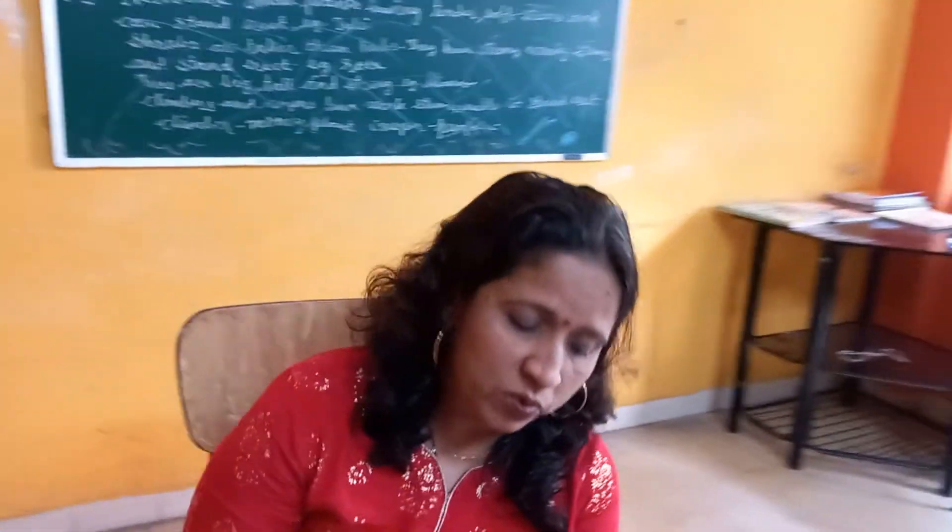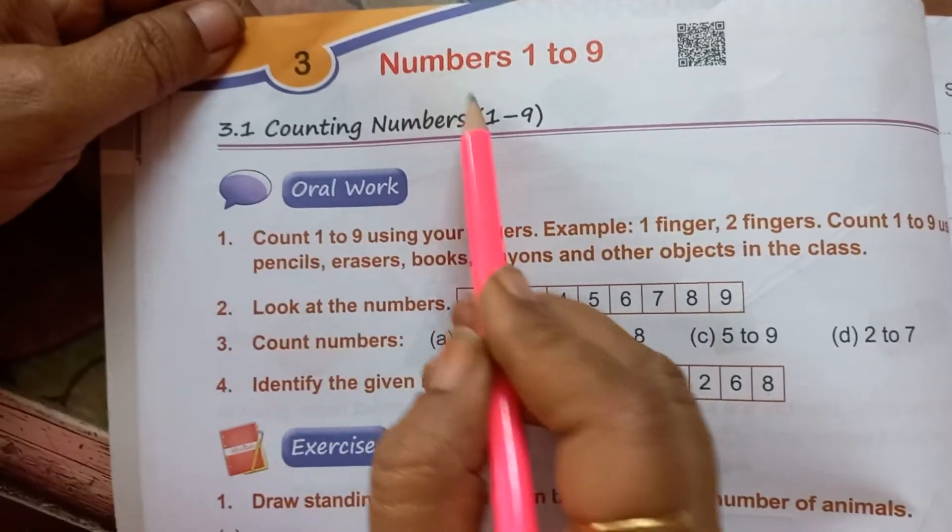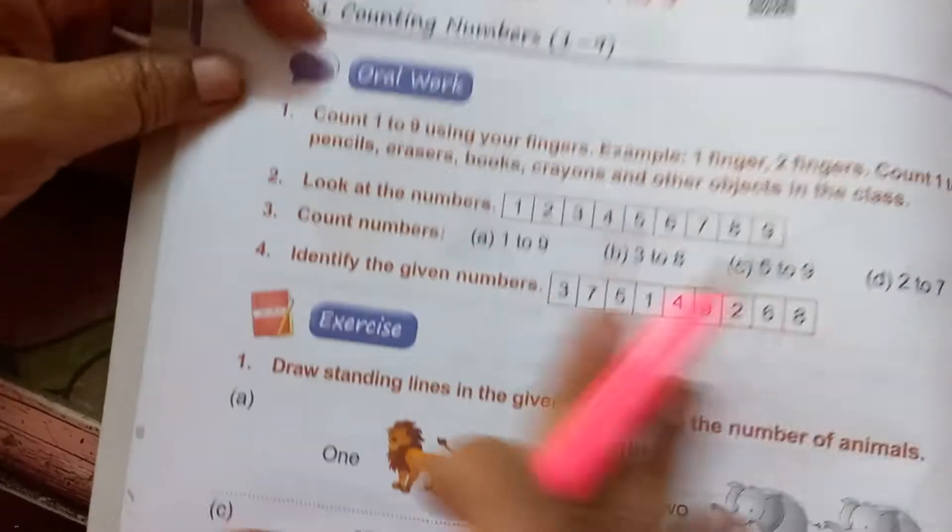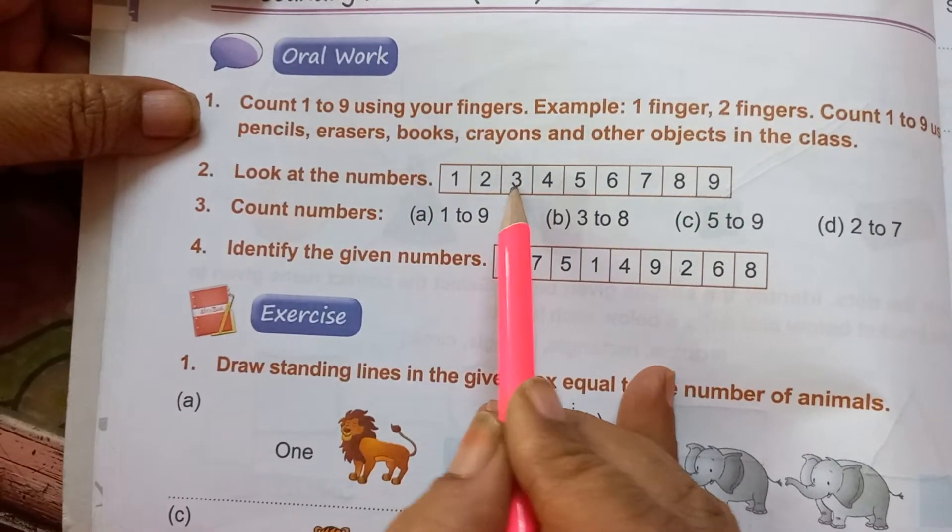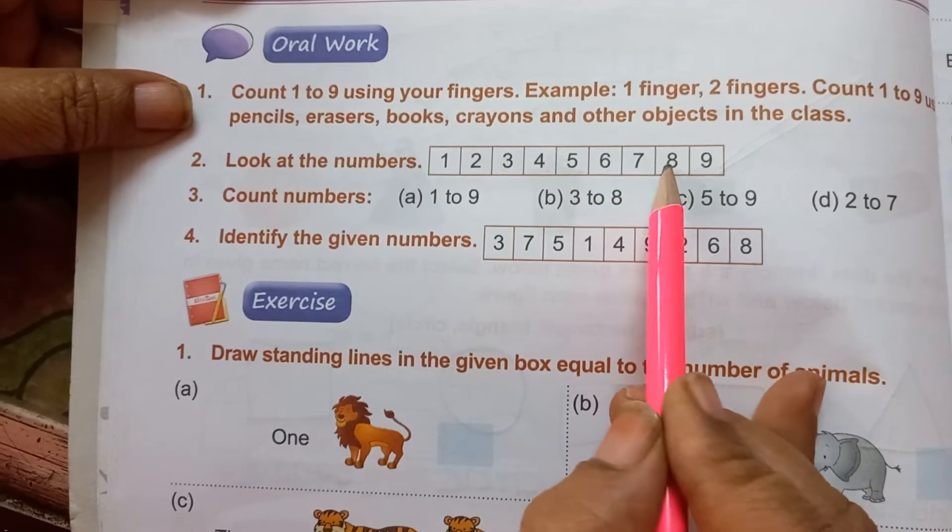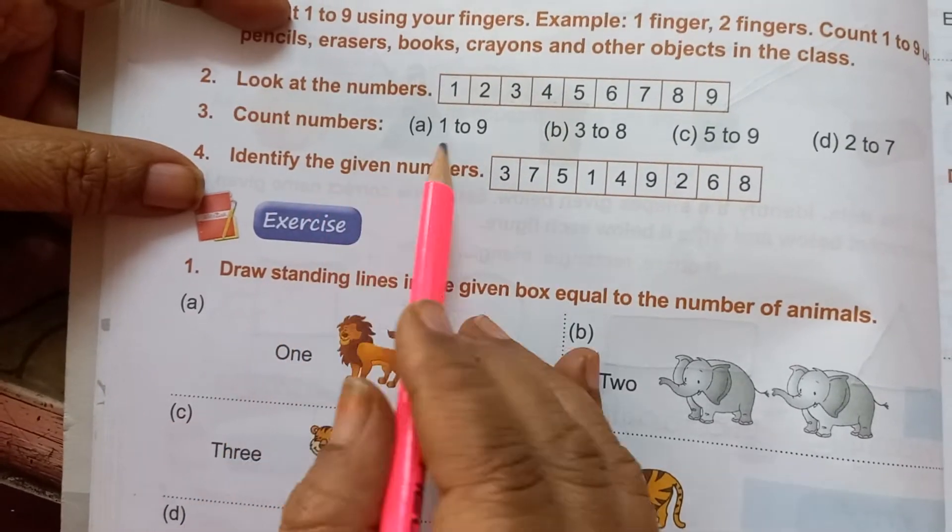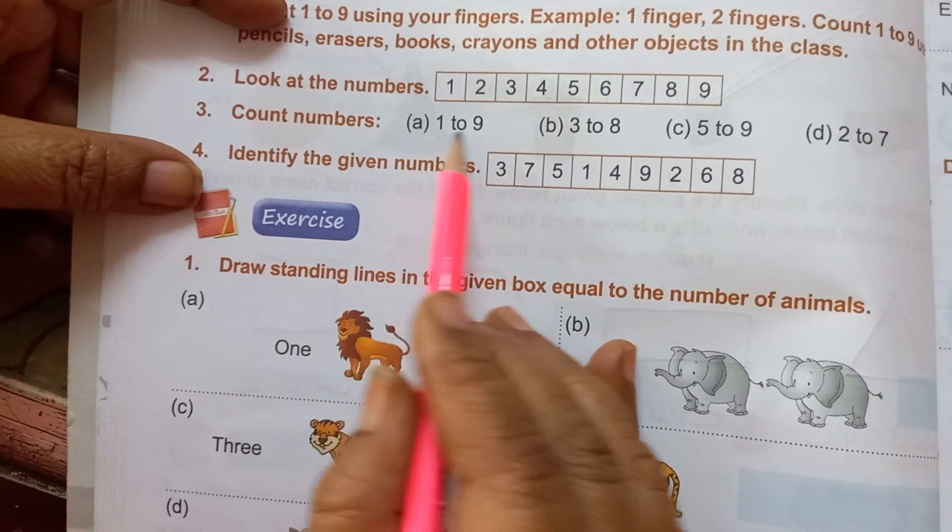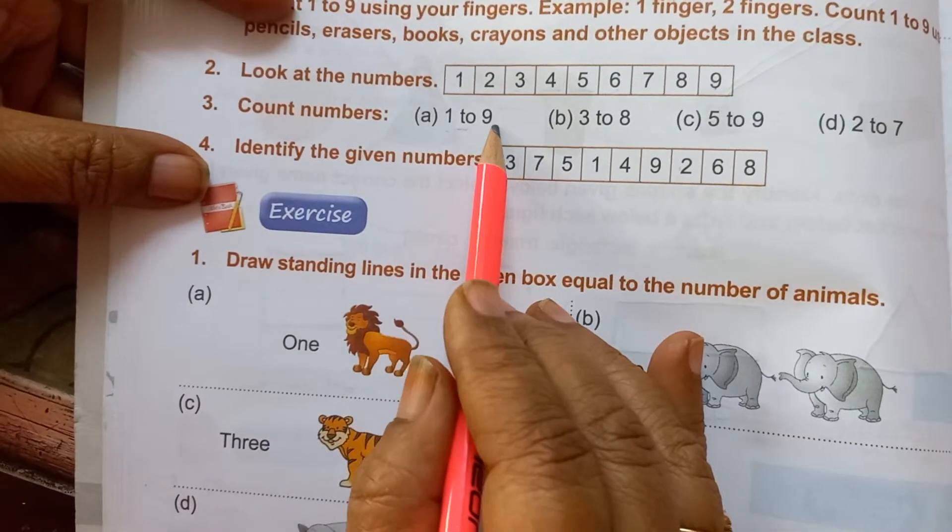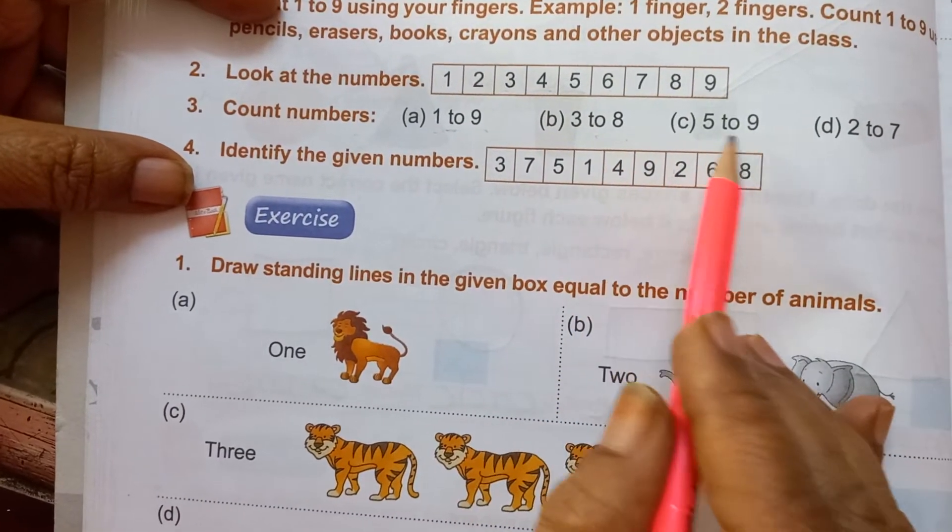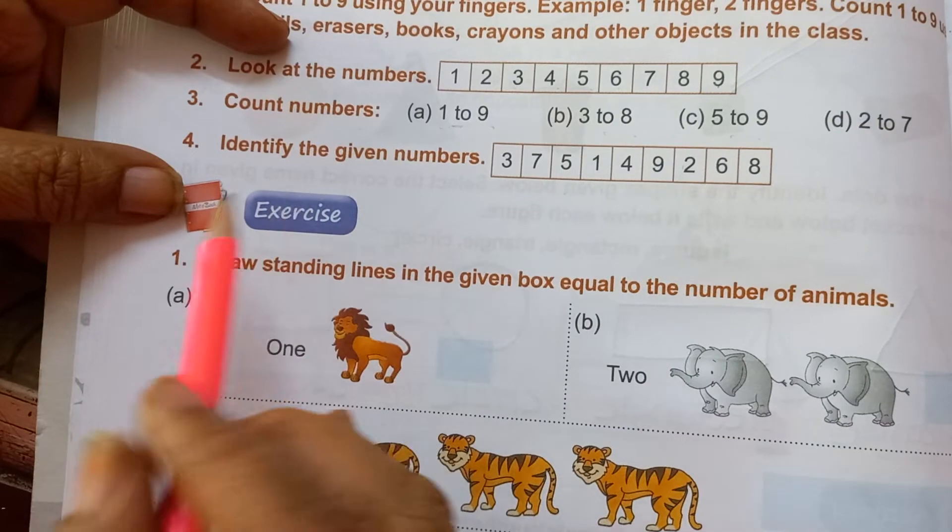Now in this lesson we will learn something more about counting. Now look here. Which are the counting numbers? 1 to 9. Here 1, 2, 3, 4, 5, 6, 7, 8 and 9. Now this is homework for you. Learn the numbers 1 to 9, 3 to 8, 5 to 9. You have to count it.